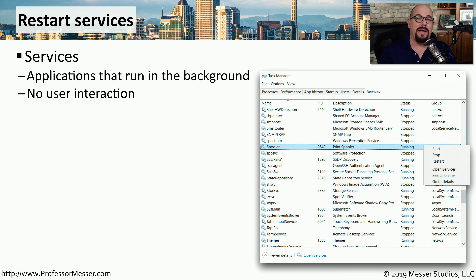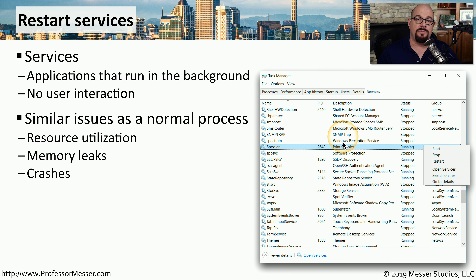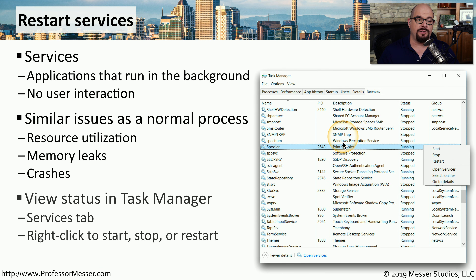Sometimes our problematic programs are applications that run in the background. In Windows, we call these services. Task Manager has a tab that allows you to see all of the running services on your computer. These services have the same type of problems that an interactive application might have — they might have a bug that causes a memory leak, or they tend to hang and need to be restarted. Inside Task Manager, you can right mouse click on the service and choose to stop, restart, or open the services application to find more detail about that particular service.